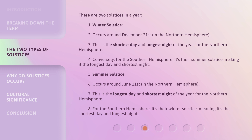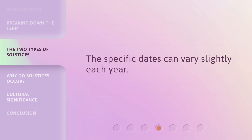The summer solstice occurs around June 21st in the Northern Hemisphere. This is the longest day and shortest night of the year for the Northern Hemisphere. For the Southern Hemisphere, it's their winter solstice, meaning it's the shortest day and longest night. The specific dates can vary slightly each year.